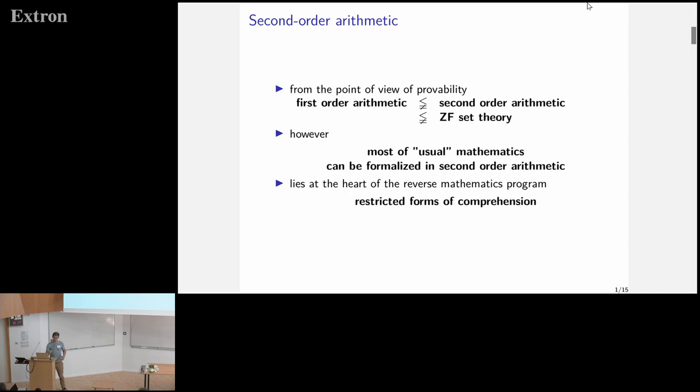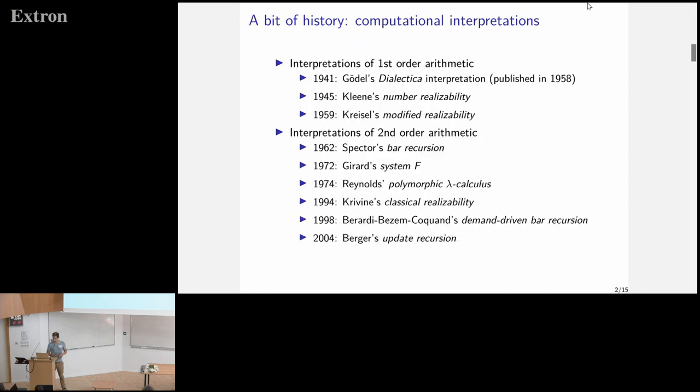Another thing that makes it particularly interesting is that it's at the heart of the reverse mathematics program. The idea of reverse mathematics is that you study subsystems of second-order arithmetic. These subsystems are obtained by restricting the kind of comprehension scheme that you allow, and you try to find the least powerful system possible for each theorem.